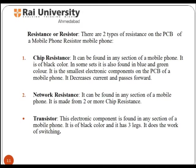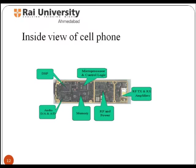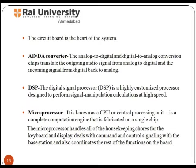A transistor is an electronic component found in any section of a mobile phone. It is black in color and has three legs; it performs switching. The analog-to-digital and digital-to-analog conversion chip translates outgoing audio signals from analog to digital and incoming signals from digital back to analog. The DSP (digital signal processor) is a highly customized processor designed to perform signal manipulation calculations at high speed. The microprocessor, also known as the CPU, handles all housekeeping of the keyboard and display, deals with command and control signaling with the base station, and coordinates the rest of the functions on the board.